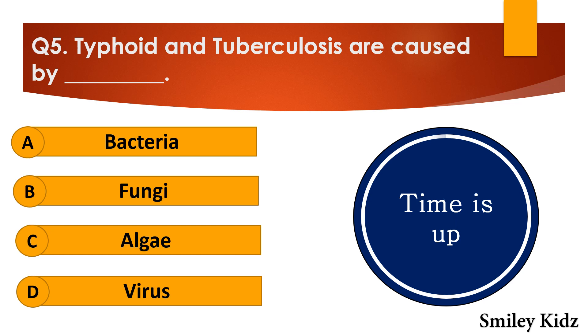Your time is up and the right answer is option A — bacteria. Typhoid and tuberculosis are caused by bacteria.